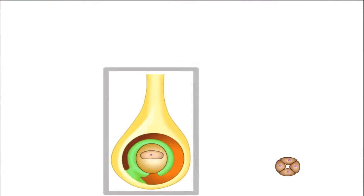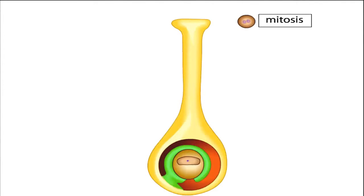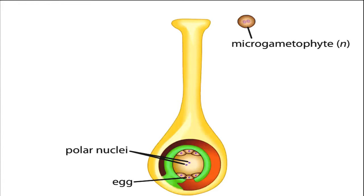Each microspore undergoes a mitotic division and differentiation to produce a pollen grain. A pollen grain is the haploid male gametophyte called a micro-gametophyte. The surviving megaspore divides by mitosis to produce seven haploid cells. One large, centrally-located cell contains two nuclei called polar nuclei. Another cell is the egg. The seven-celled structure makes up the female gametophyte called the megagametophyte.